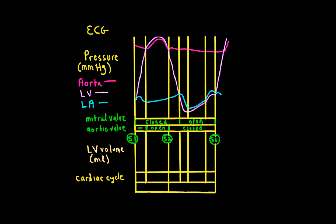So there's our S1, S2, S1 — and those are really the only heart sounds that we normally hear. Now, just take a look at where the valves are closed. See where both the mitral valve and aortic valve are closed? The volume in the ventricle must not be changing because no blood's coming in and no blood's leaving.